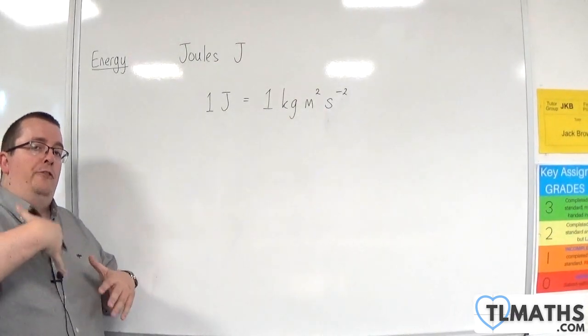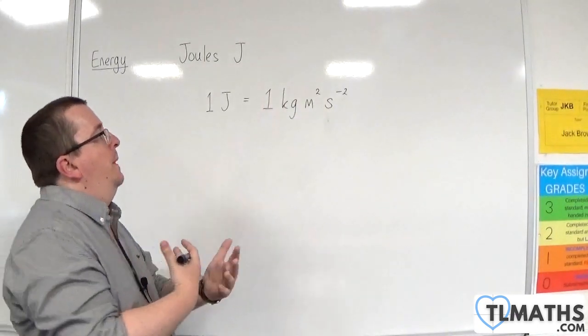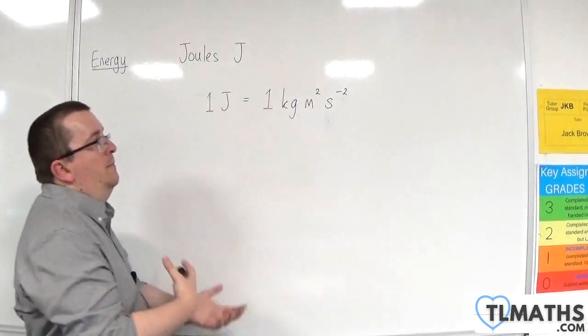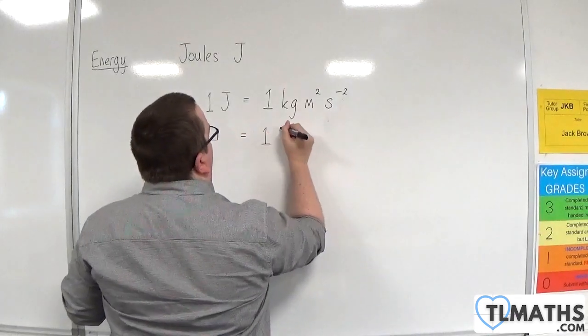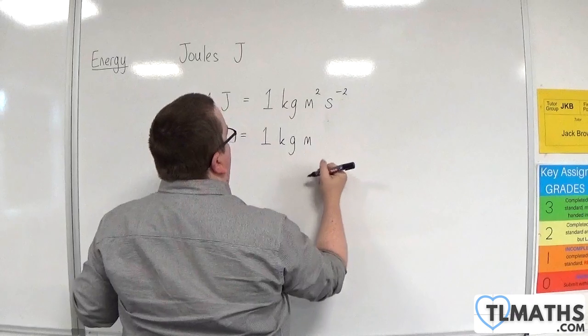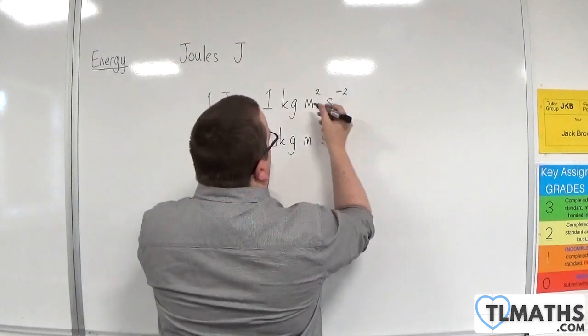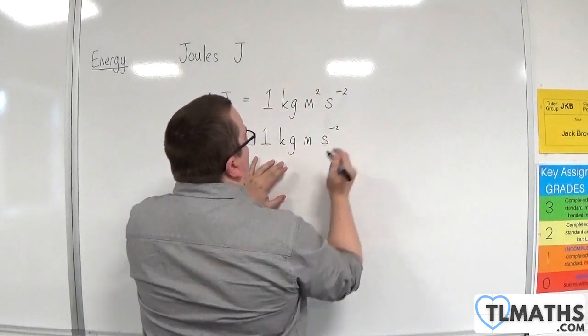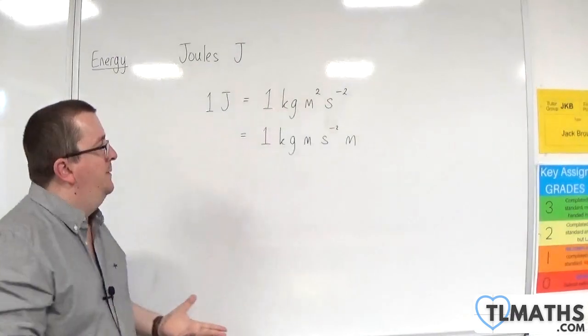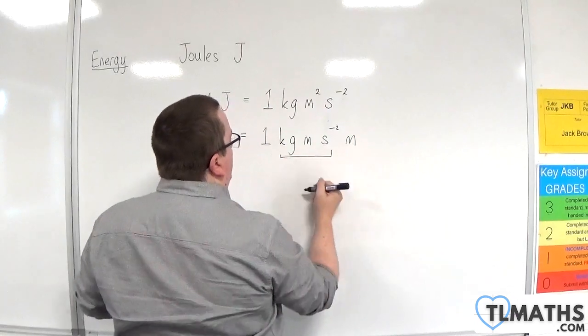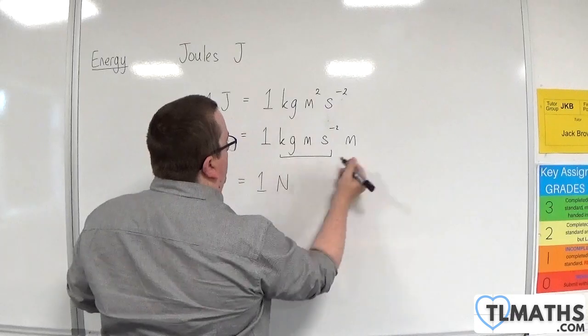You will have met forces within the mechanic section of the A-level math, so you'll have heard of newtons. You may have seen it written in terms of kilos, meters, and seconds. So that is one kilo meter per second per second. That is one newton. And of course, the thing that's different here is that I'm missing a meter. So I'll put that on the end, and that would obviously make the meter squared. So this bit here is newtons. So this is one newton meter.